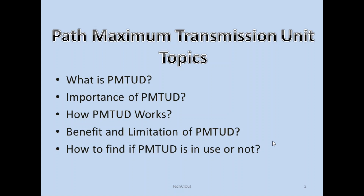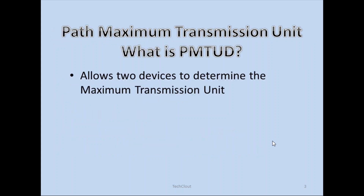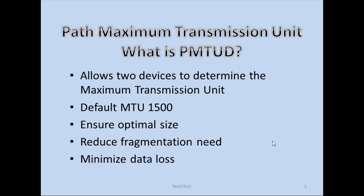Let's first see what is PMTUD. PMTUD allows two devices to determine the maximum transmission unit. By default, the MTU for devices is 1500, and it also ensures the optimal size of the data so that it can pass through the network easily. That way it reduces the fragmentation requirement, doing minimal fragmentation, which also leads to minimizing data losses in the network.